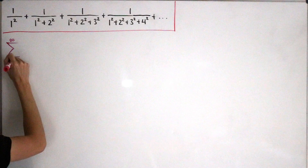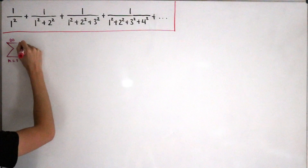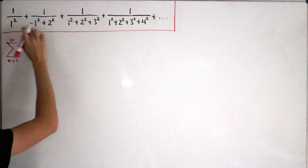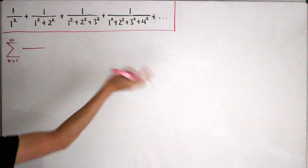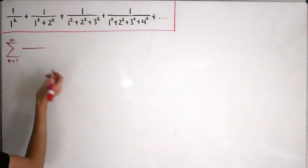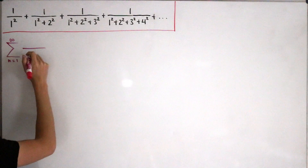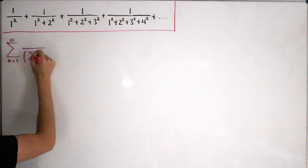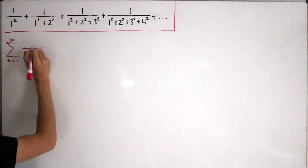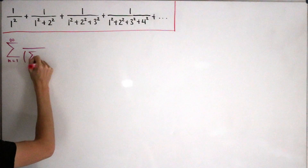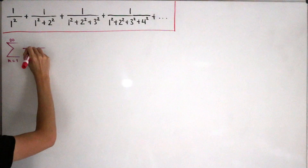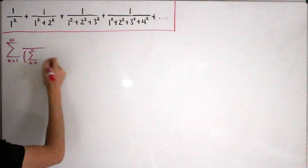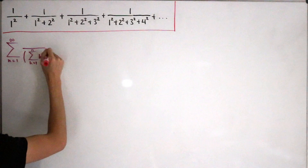This can be written as the infinite sum with index starting at n=1 of 1 divided by the denominator, which we can write as a partial sum — specifically in partial sum format. We start our inner index at k=1 and let it go to n, where everything is in the form of sum of squares, so we write k².